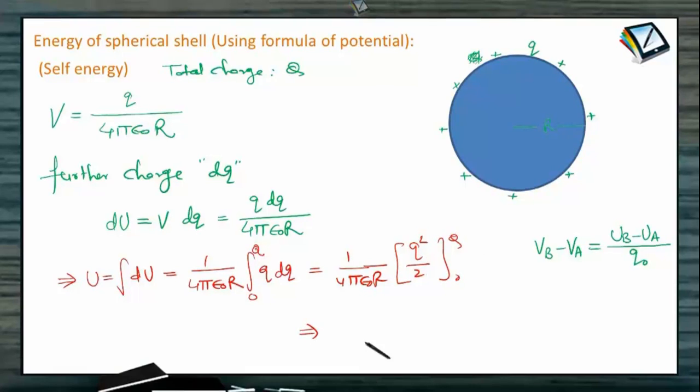So here that we have got U is equal to Q square divided by 8 pi epsilon naught R. So this much amount of energy is associated with this spherical shell.